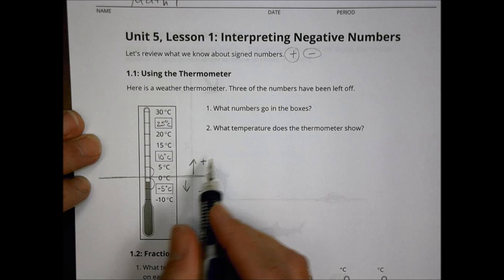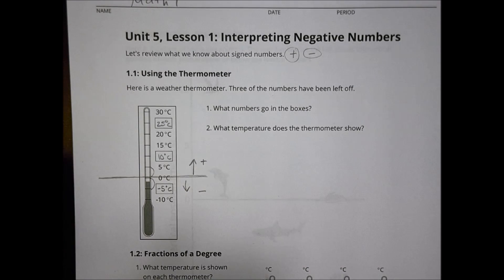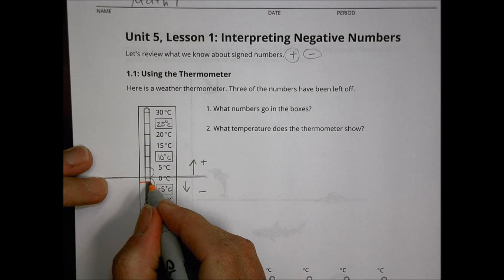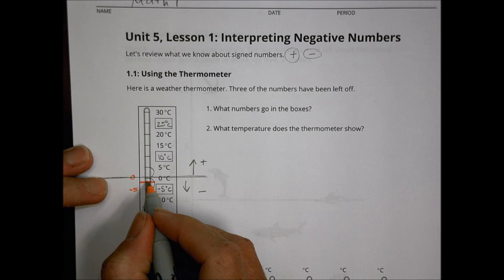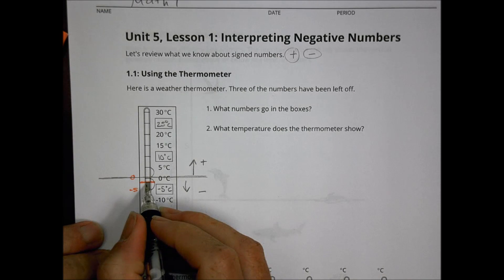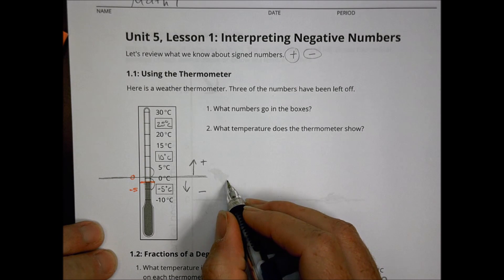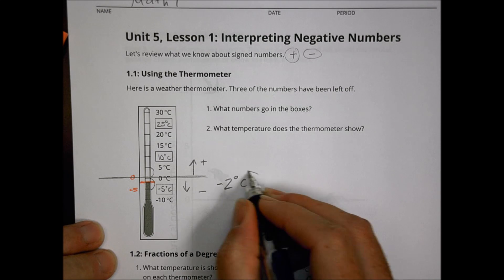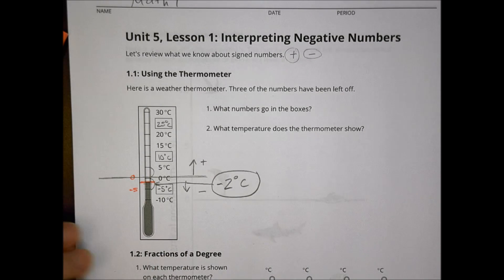What does the temperature show? Our temperature is located at a point between 0 and negative 5. The halfway point here is about 2.5, so I might say — and again, this is an approximate — that the temperature is about negative 2 degrees Celsius. Just an approximate value there; you can estimate that yourself and see what you think.